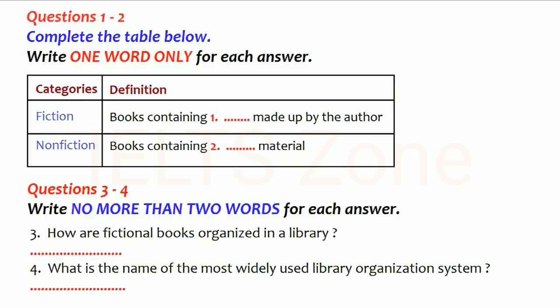The most widely used system is the Dewey Decimal System. It was designed by an American librarian named Melvin Dewey. It is called a decimal system because it divides all non-fiction books into ten major categories. These are further divided into subdivisions.